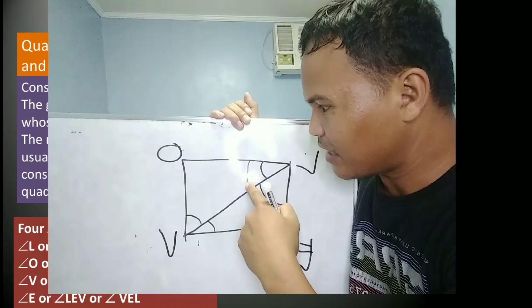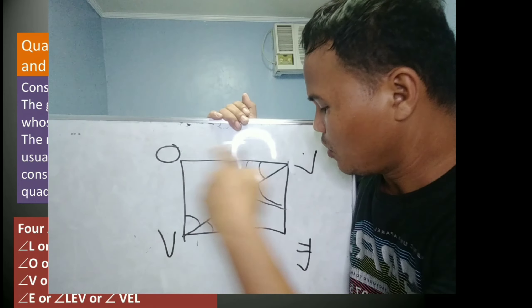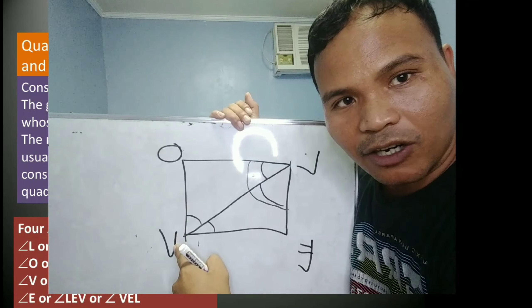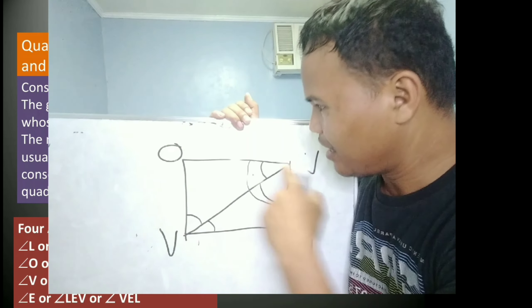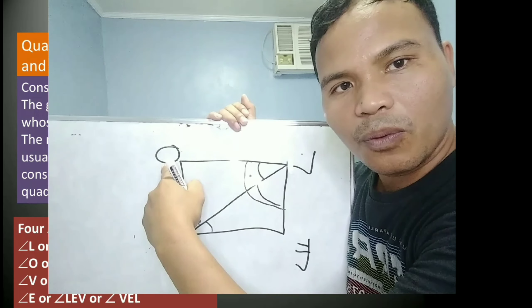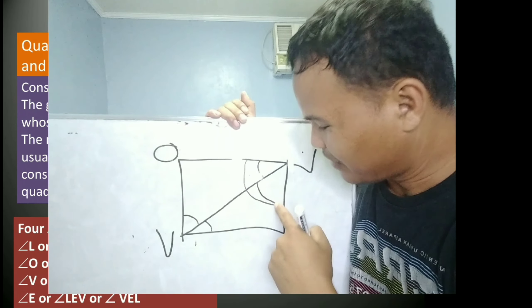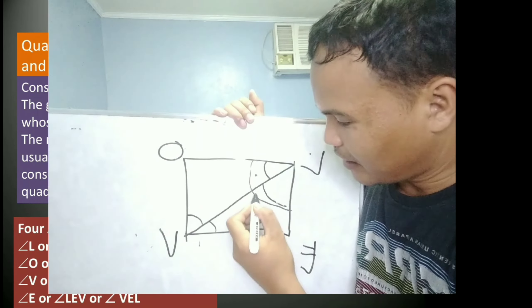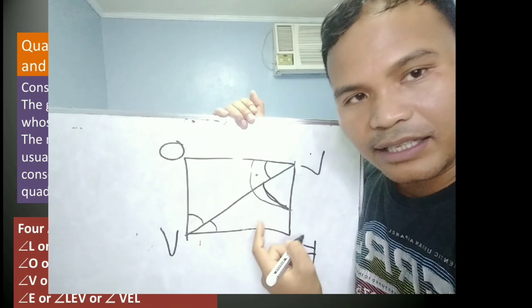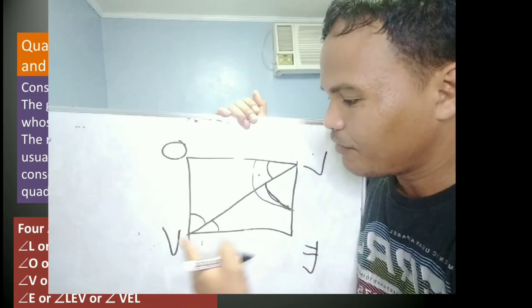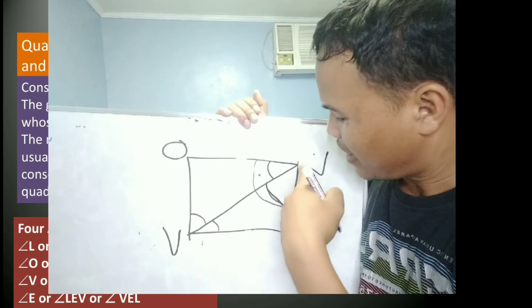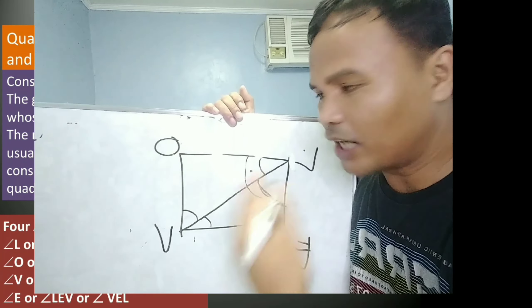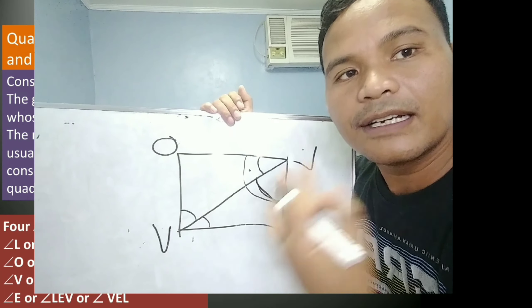The name of this angle is angle O-L-V or angle V-L-O. As well as this one — this is not angle L, but it is angle V-L-E or angle E-L-V. That is how we name an angle using three letters.